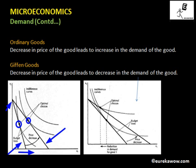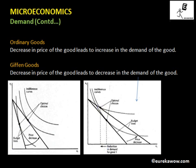Now let's look into the case of Giffen goods. Let this be the initial budget constraint and this be the final budget constraint after the price of good one decreases — again a rotation outwards about this point. This is the initial bundle chosen by the consumer and this is the final bundle. As you can see, there is a reduction in the demand for good one as the price of good one decreases. Therefore good one is a Giffen good, because a decrease in price leads to a decrease in demand.